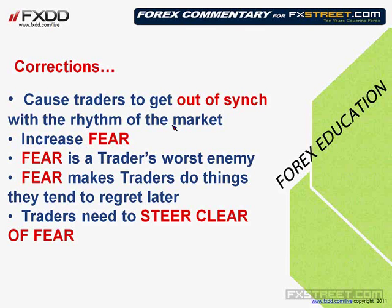Corrections cause traders to get out of sync with the rhythm of the market. There is a rhythm — the market goes up, it comes down, and in a trending market that rhythm repeats itself. If it doesn't, it gives you clues as well, and that's the essence of using Fibonacci retracements. If you're out of sync with the market, it's going to increase your fear, and fear is a trader's worst enemy. Our game plan is to trade trends and keep fear to a minimum.